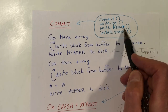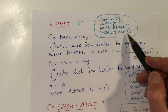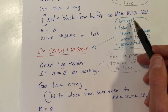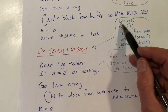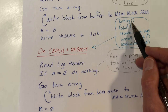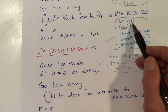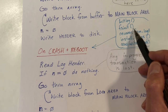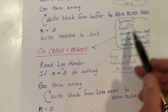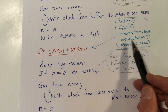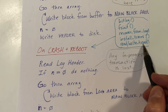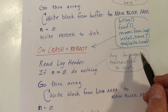The commit operation is done in functions: commit, write_log, write_head, and install_trans. On reboot, we execute the initlog function, which initializes the variables of the log. That's called from fsinit — file system init — which is called in the init process as one of the first things it does the first time it has a time slice. It will invoke recover_from_log, install_trans, and it also calls read_head and write_head. Now let's take a look at the code.